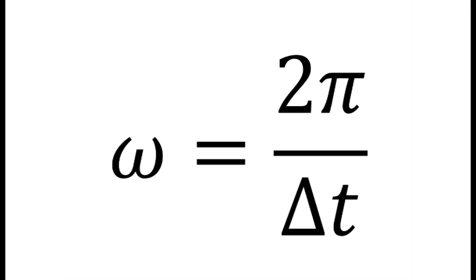We can also go ahead and find the crank speed omega and RPM using this equation: Omega equals 2 pi over delta T.